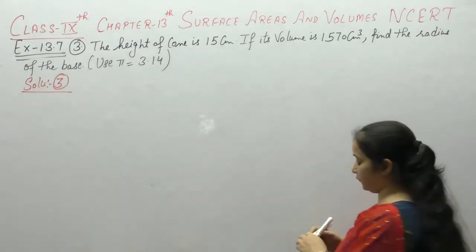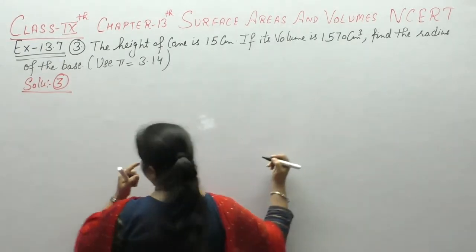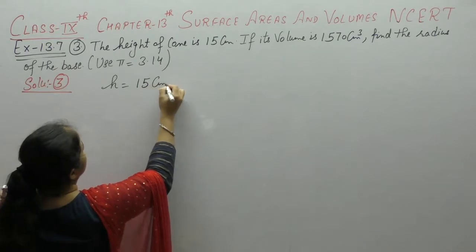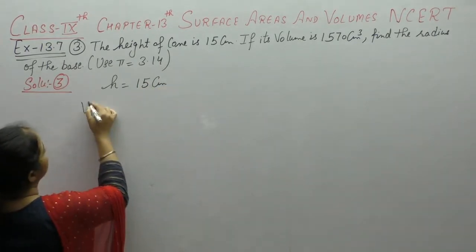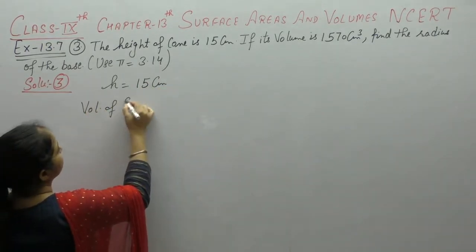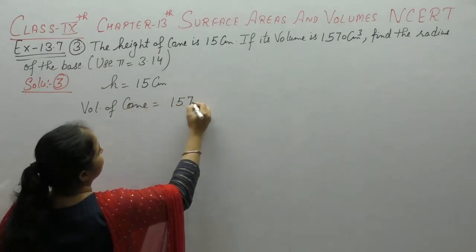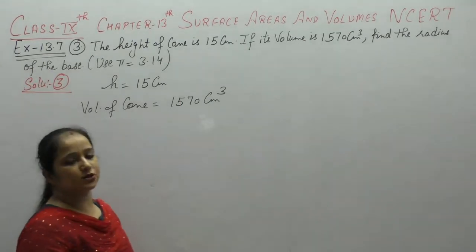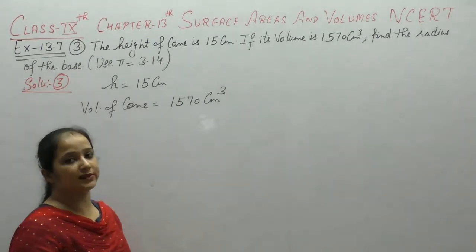The height of the cone is 15 cm. If its volume is 1570 cm cube, find the radius of the base. Use pi is 3.14.